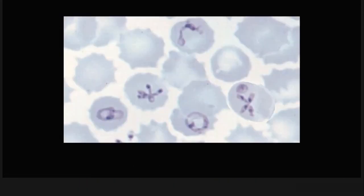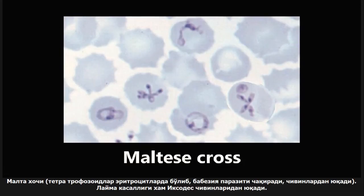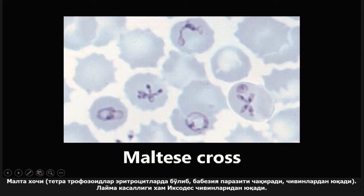This next one is an example of a Maltese cross. It is a tetrad of trophozoites seen in red blood cells. The big condition associated with this is babesiosis.